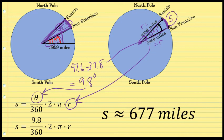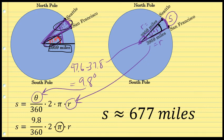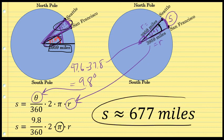That product is about 677 miles. This is an approximation: the latitude of San Francisco was approximated as 37.8, Seattle's as 47.6, and the radius of the earth as 3,959 miles. Additionally, the formula uses pi, an irrational number. Taking all those things together, this result of 677 miles is approximate, but it's fairly close. The distance from Seattle to San Francisco is about 677 miles.